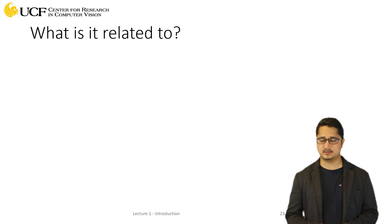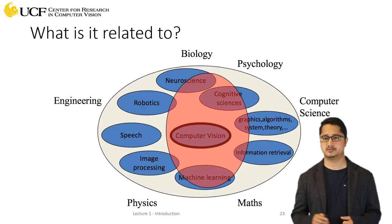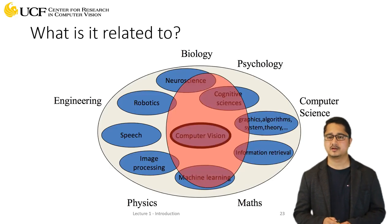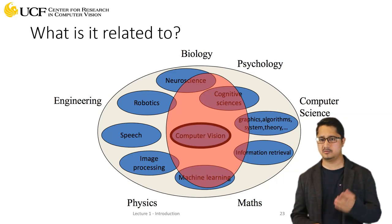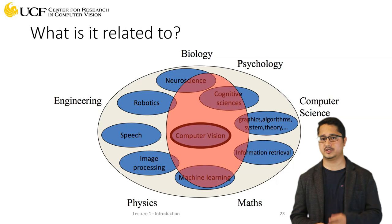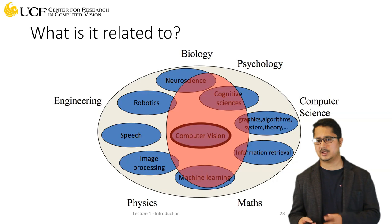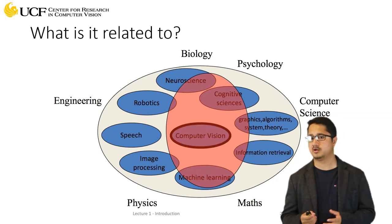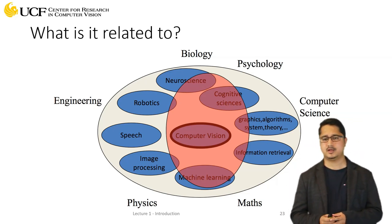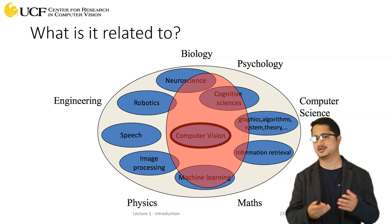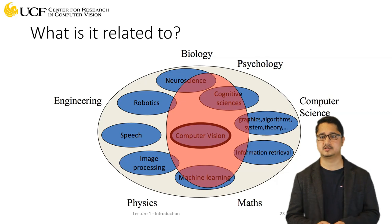Before we go into the basics, let's first try to understand what other research areas are relevant to computer vision. In the Venn diagram shown here, you can see that computer vision is at the center and we have a lot of other areas coming from biology, computer science, mathematics, and physics. Computer vision has overlap with neuroscience, cognitive science, algorithms, information retrieval, machine learning, and image processing. Speech is not related to vision as it's a different modality, and we do have some overlap with robotics where vision plays a very important role.